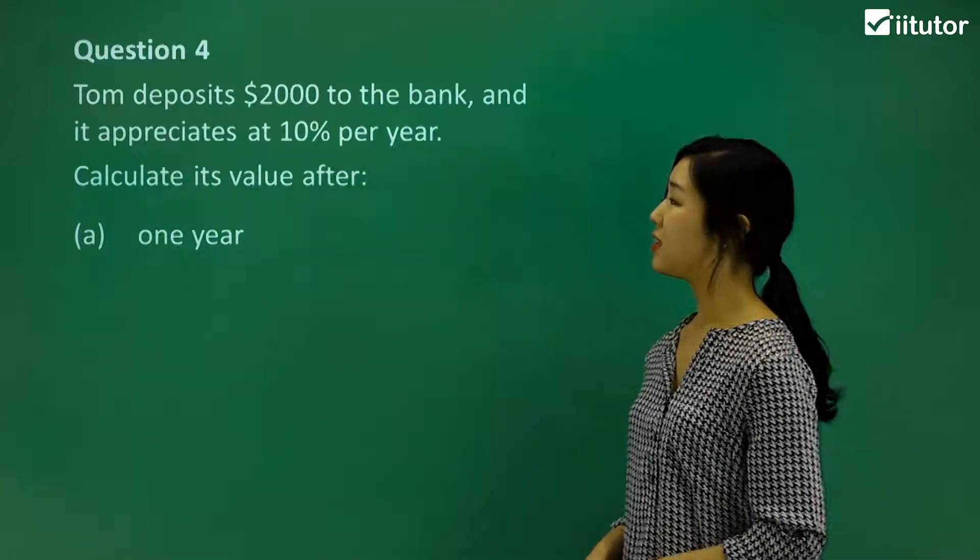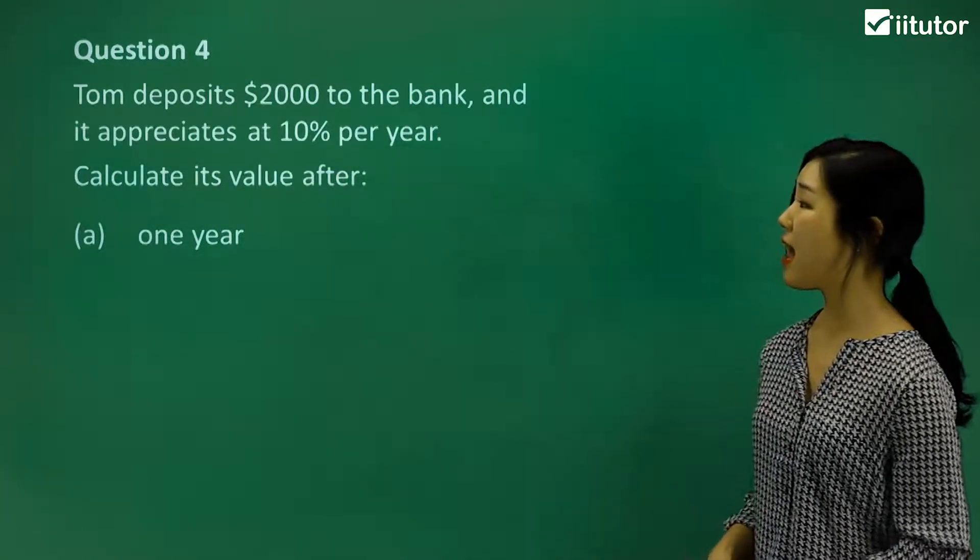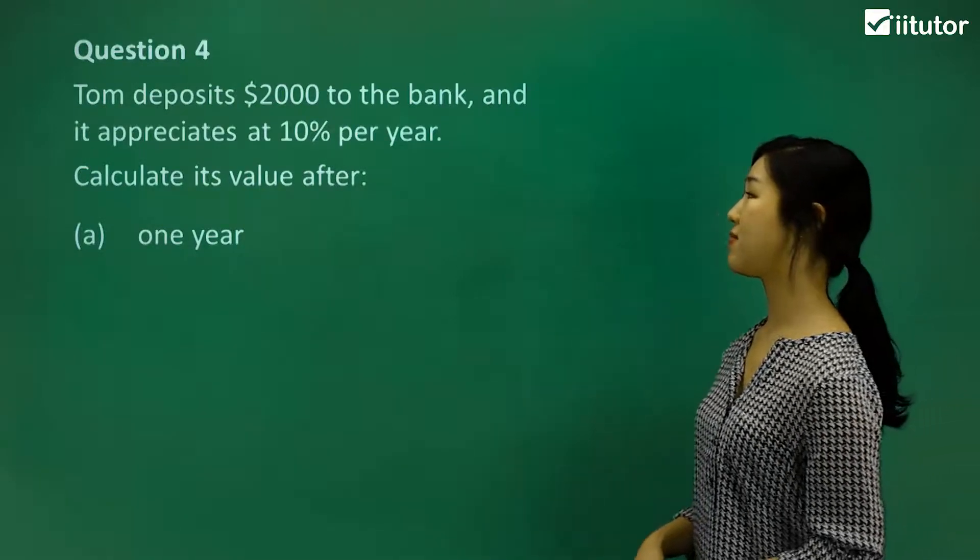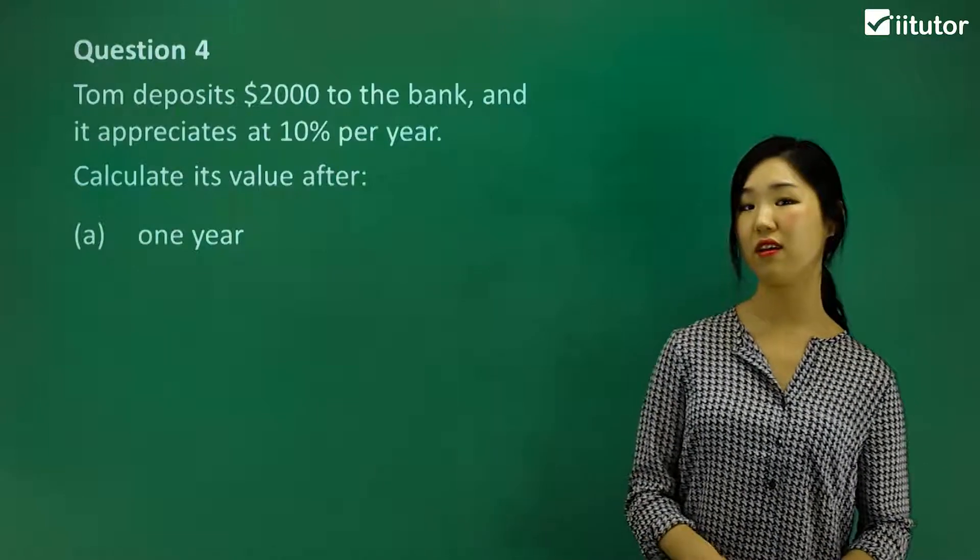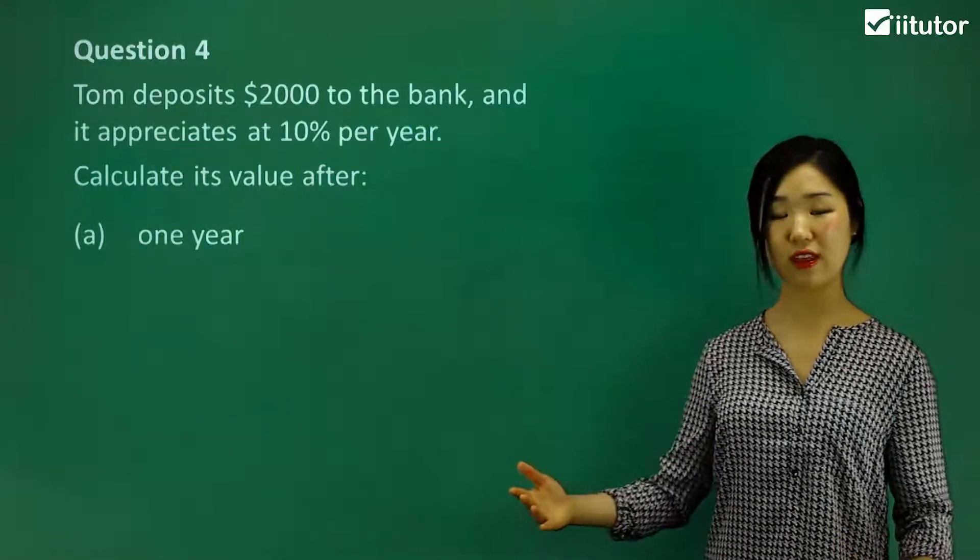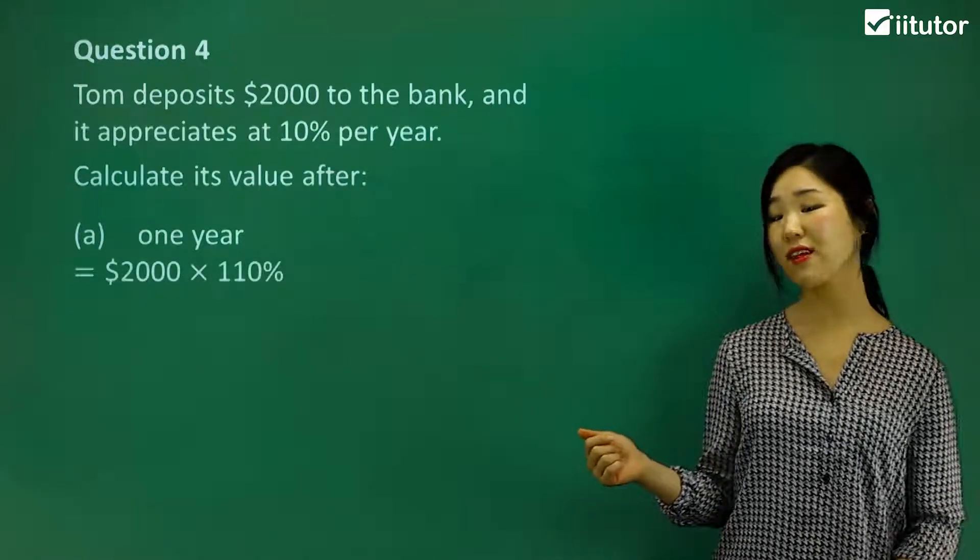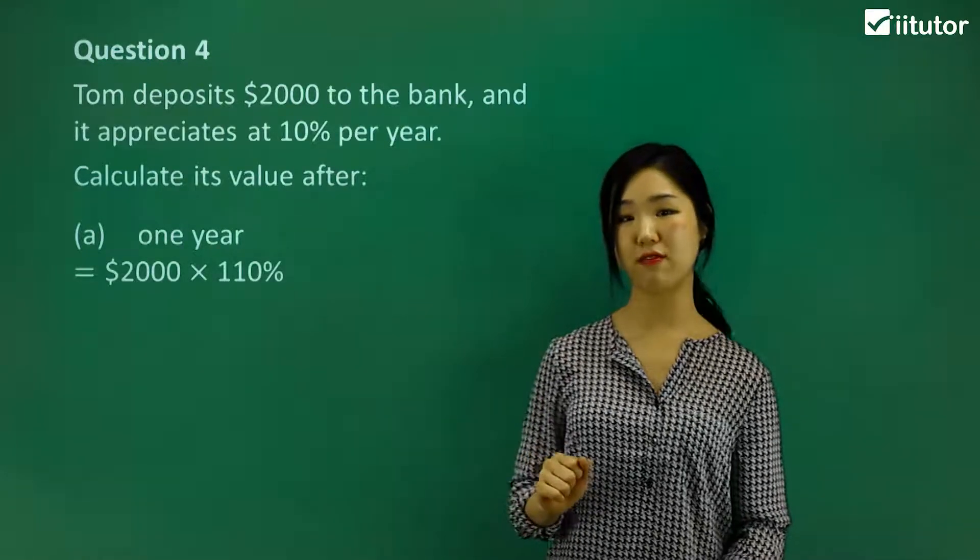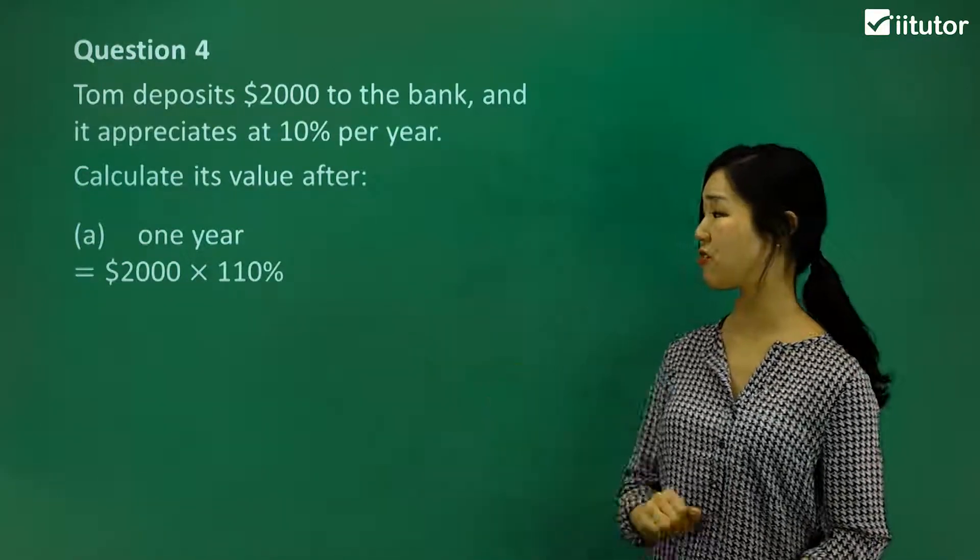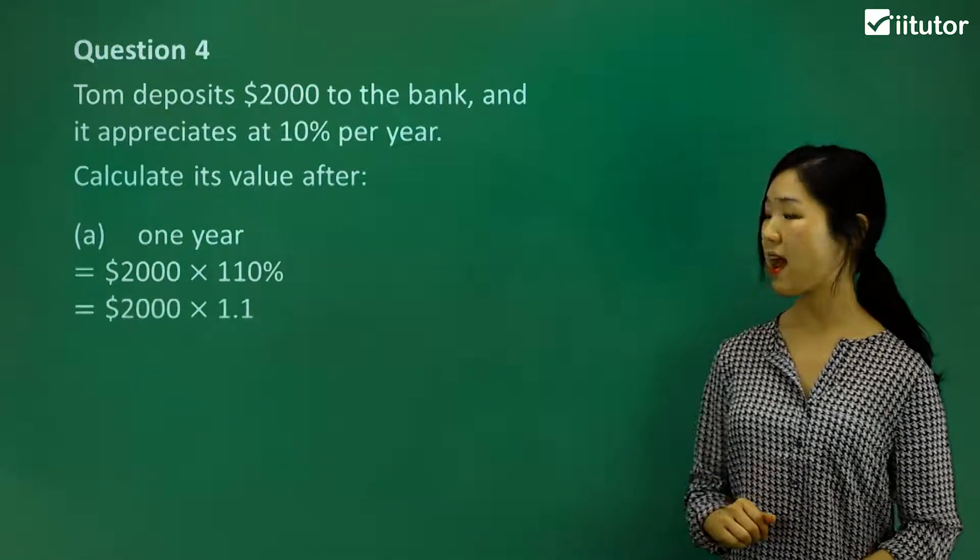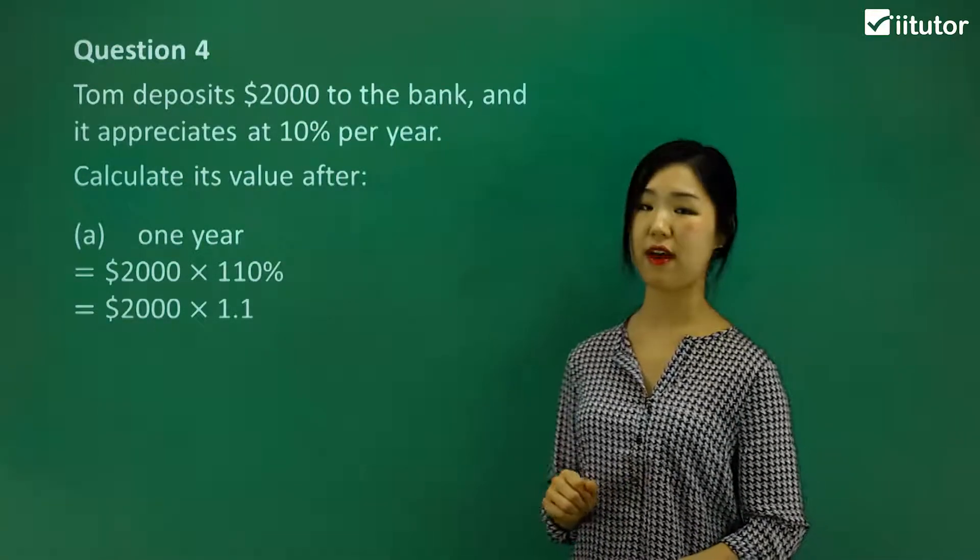Question 4. Tom deposits $2,000 to a bank and it appreciates at 10% per year. Calculate its value after one year. So if it's appreciating, that means it's increasing. So if we're increasing by 10%, basically we're getting 110% of the initial value. Because 100% plus 10% is 110%. So that as a decimal is 1.1.